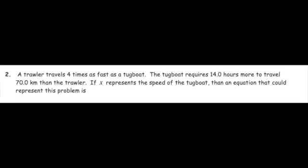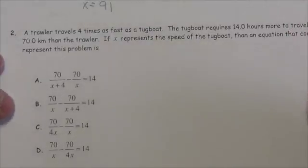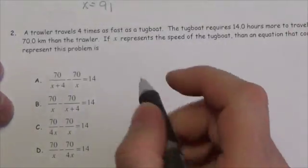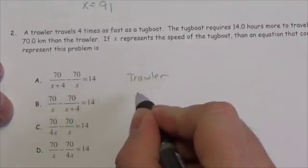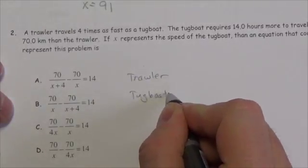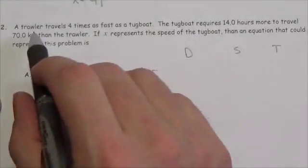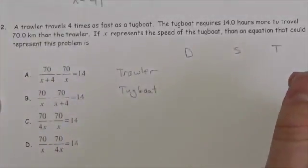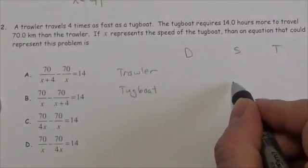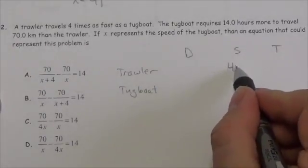A trawler travels four times as fast as a tugboat. The tugboat requires 14 hours more to travel 70 kilometers than the trawler. If x represents the speed of the tugboat, which equation represents this problem? To answer, build a chart with trawler and tugboat. We don't know the tugboat's speed, so call it x; the trawler is 4x.